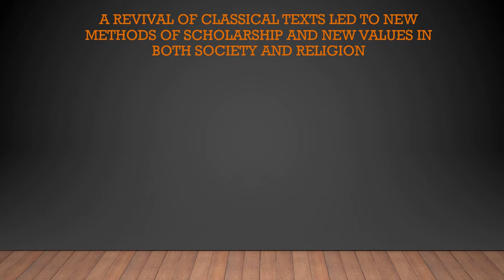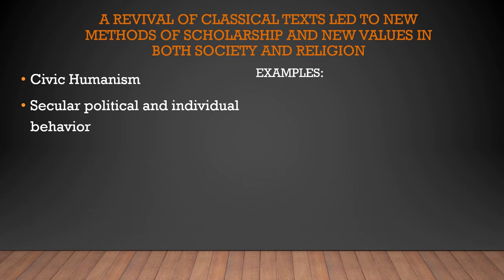Another idea that supports these new values is civic humanism. Renaissance humanists endorsed this notion, applying new values to resolving social and political problems. One of the better examples is Castiglione. This whole idea of civic humanism — new secular political and individual behavior guiding these problems — is best expressed in Castiglione's 'The Courtier.' Castiglione wrote 'The Book of the Courtier' in 1528, defining the qualities necessary for successful members of the ruling elite, combining etiquette and political science.